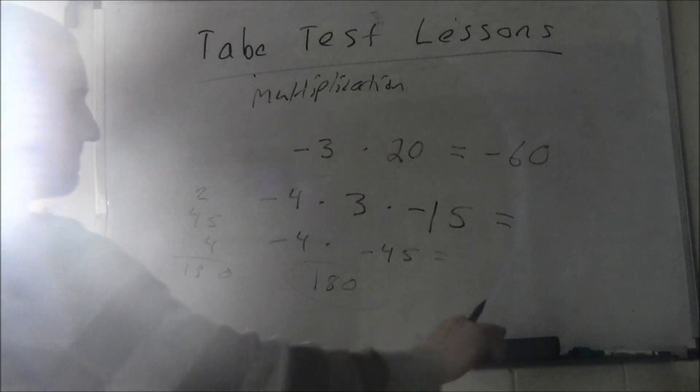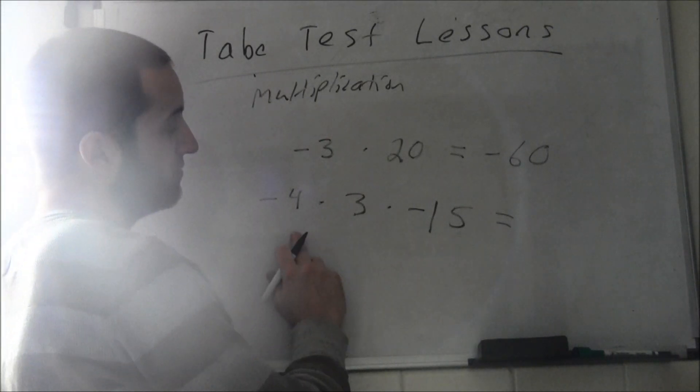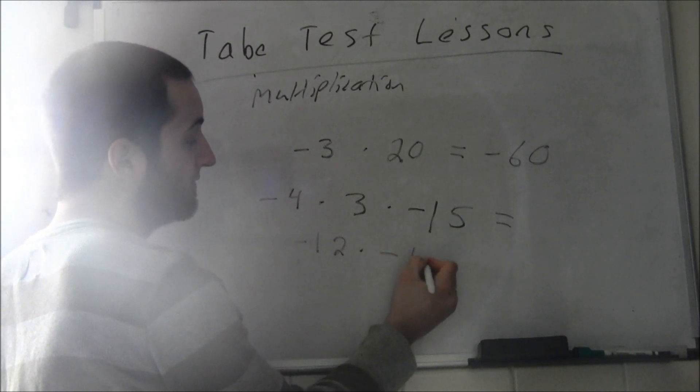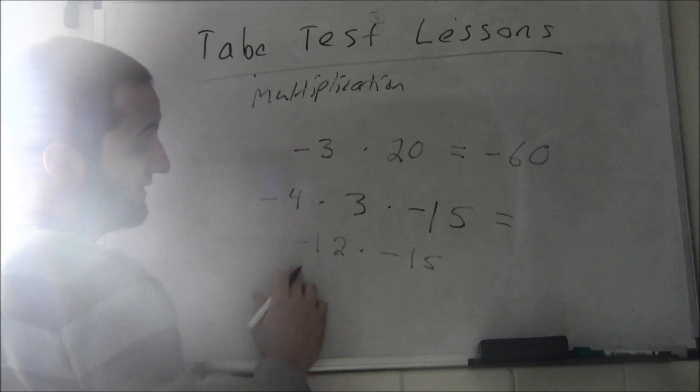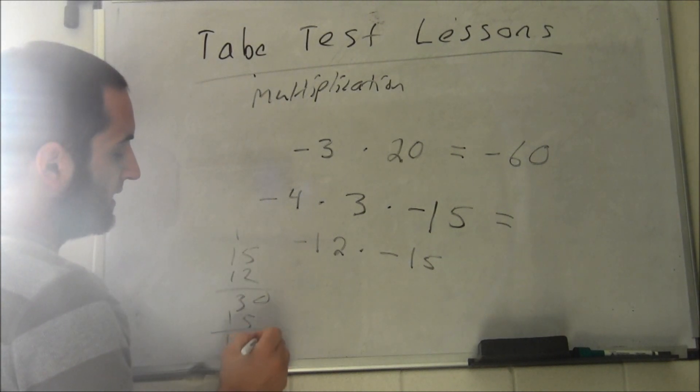Let's do these two terms first: negative 4 times 3 is negative 12, times negative 15. Negative times negative is going to be positive. 15 times 12: 0, 1, 2, 3, 1, 5, 1, 1 - you get 180.